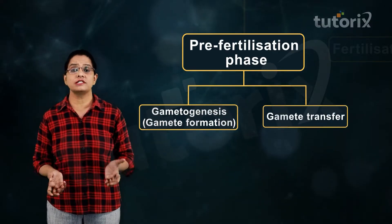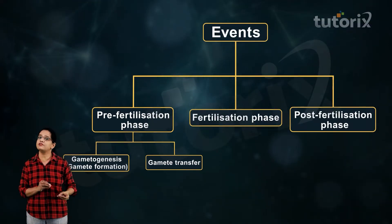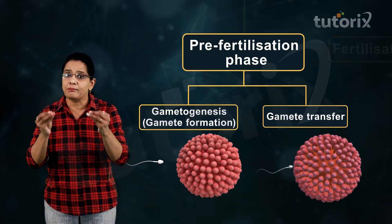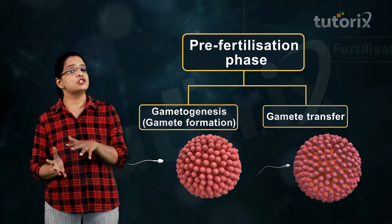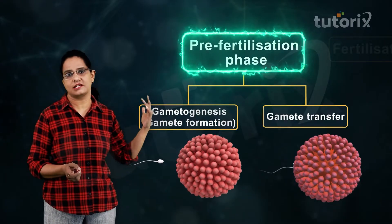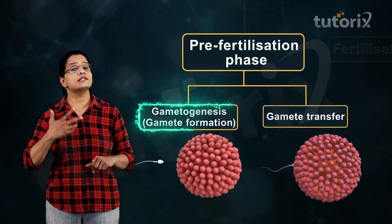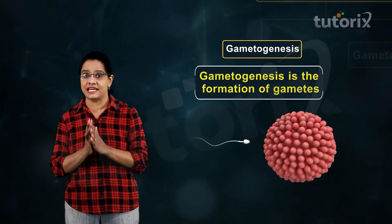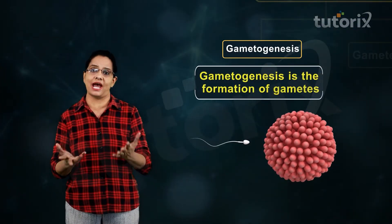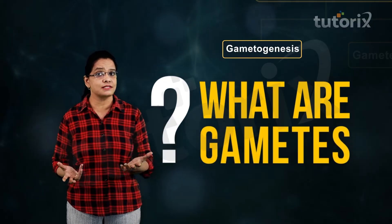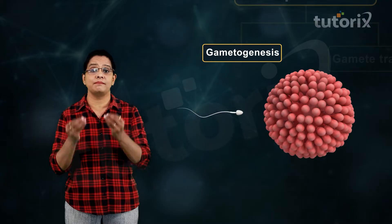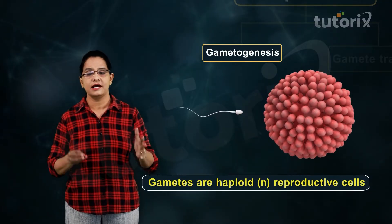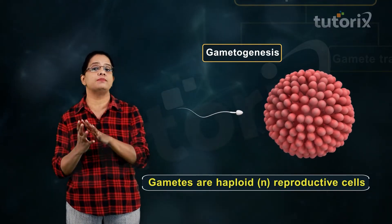Before fertilization, the gametes have to be formed and they have to be brought close to each other — these two events are part of pre-fertilization. Gametogenesis is the formation of gametes. Gametes are basically haploid reproductive cells.